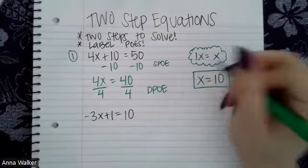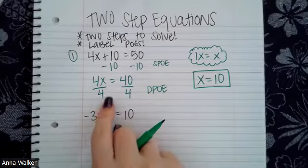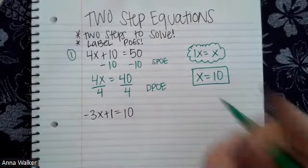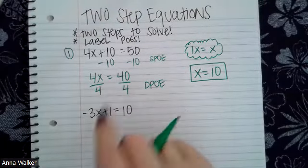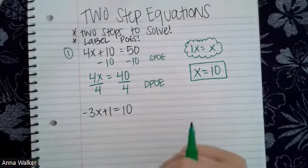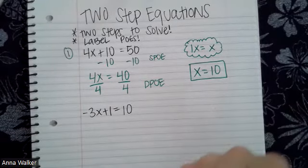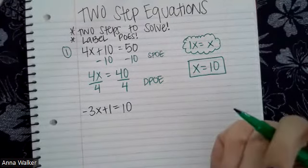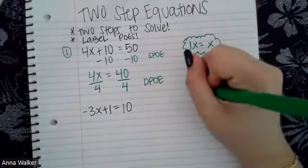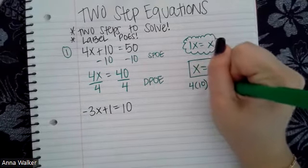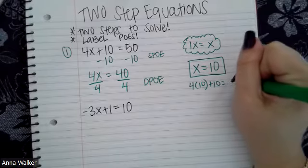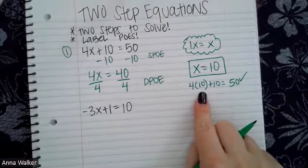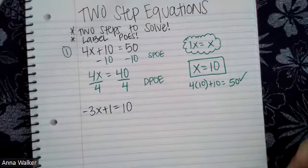So X is equivalent to 10. Some of you may have been able to figure that out without writing the DEPOT property, but it's important to write it down. In this instance most of us could do it in our head — we know four times 10 makes 40 — but it's good practice for the future when it's not so obvious and you may need to do long division. We can always check our work by plugging in 10: four times 10 plus 10 equals 50, and following the order of operations, four times 10 is 40 plus 10 is 50. That's true.